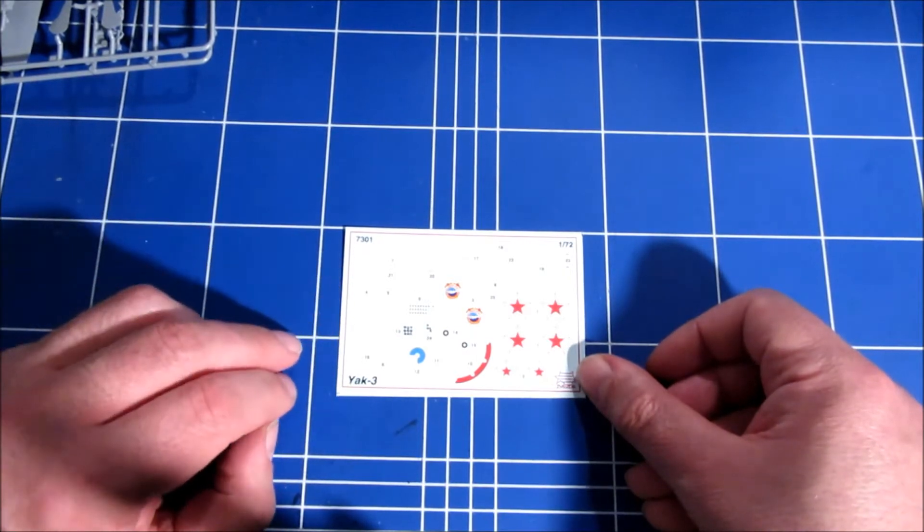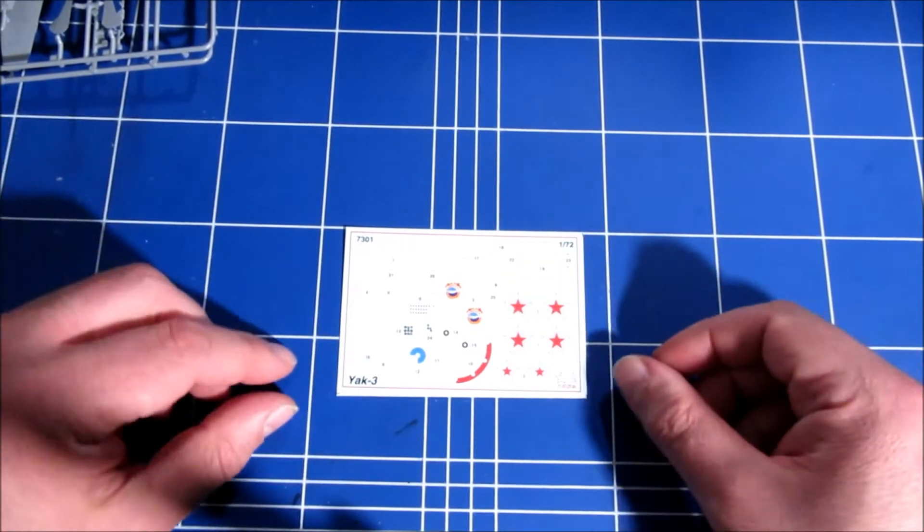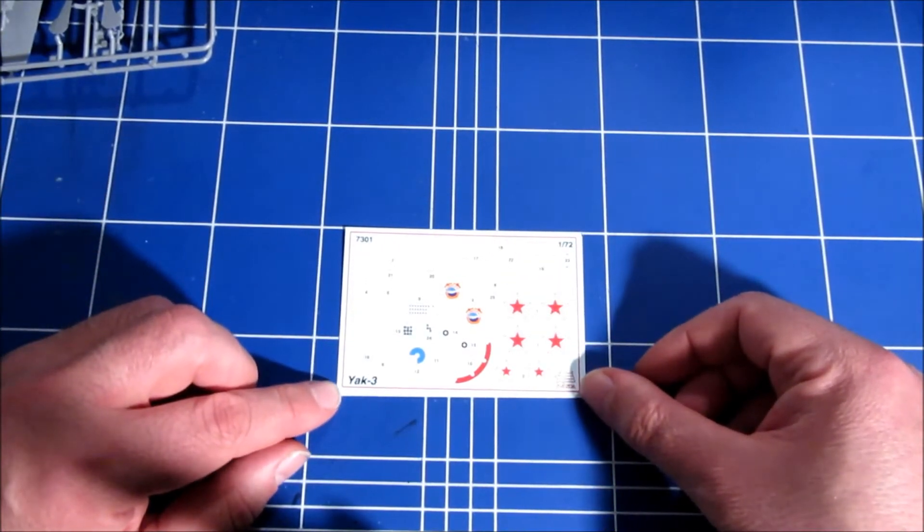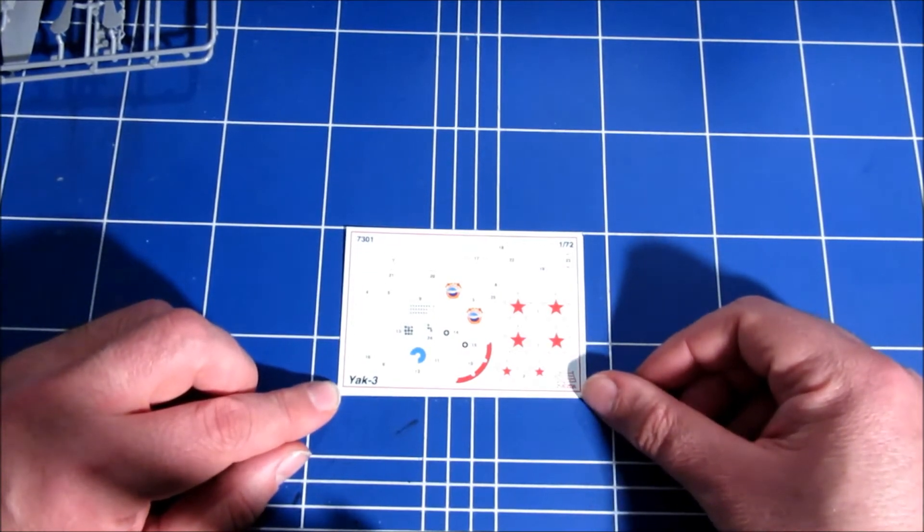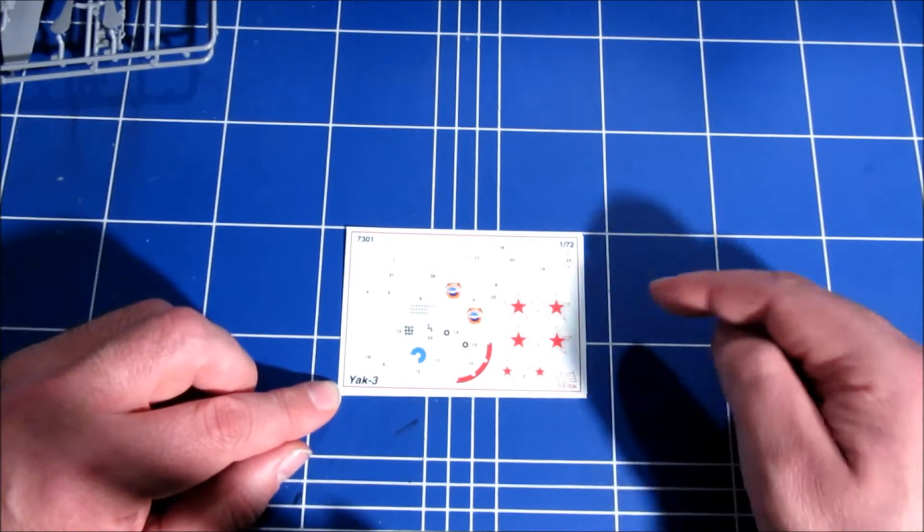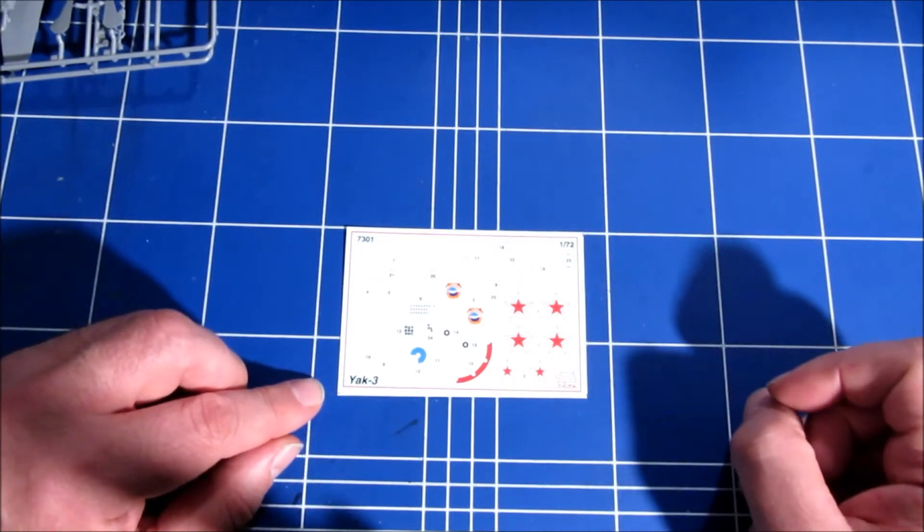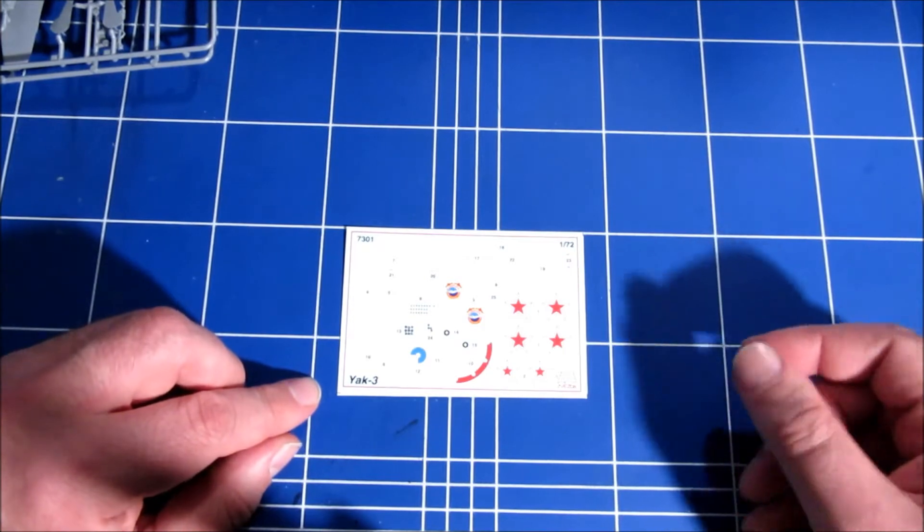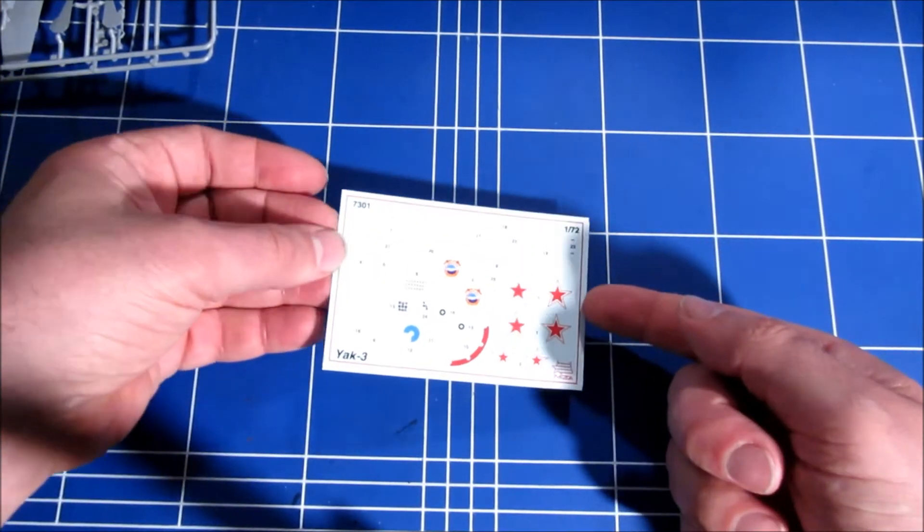Which is a real Russian squadron. And the decals themselves look very good. Nicely in register. Some nice stenciling here. All together very good. And that for just under 9 euros.